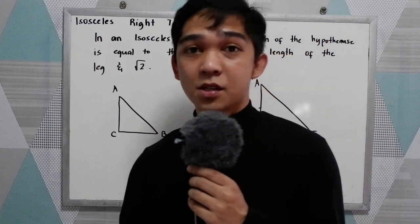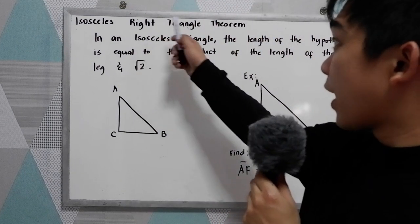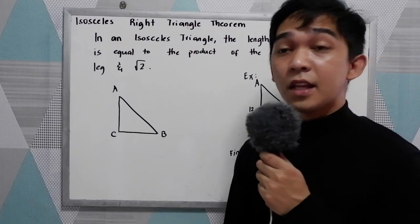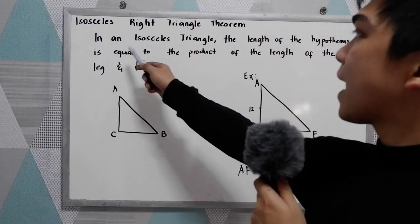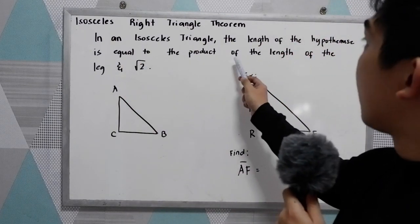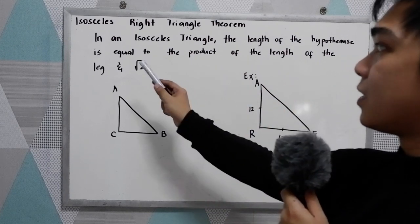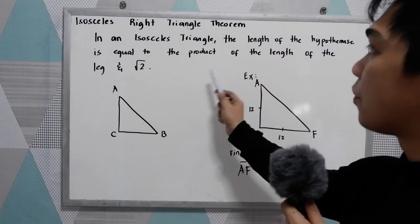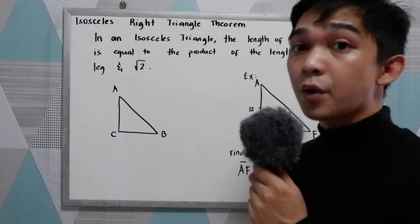Good day everyone. Today I will be discussing the isosceles right triangle theorem. The theorem states that in an isosceles triangle, the length of the hypotenuse is equal to the product of the length of the leg and square root of 2.